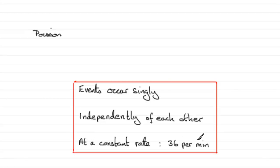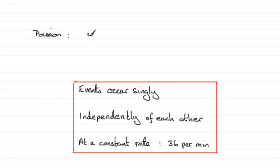We're told 36 vehicles pass per minute, so it will be a Poisson distribution. The mean will change though, because we're dealing with a 15-second interval, which is a quarter of a minute, and so a quarter of 36 is going to be 9. So Poisson with mean lambda equal to 9. This is the first part for you.